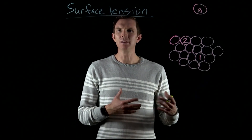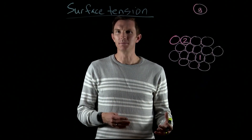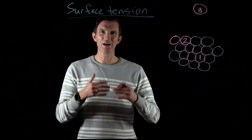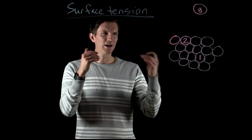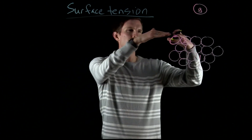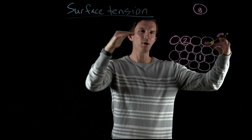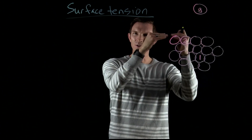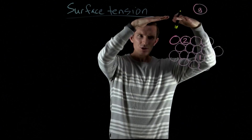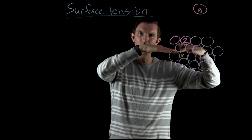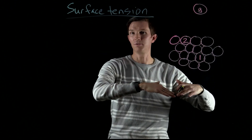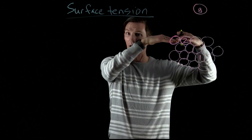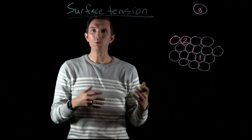We're going to talk about this idea of surface tension. Surface tension is where liquid particles sitting across the surface are attracted to each other, restricting something from going through that surface. So it has a tension sitting on the surface.